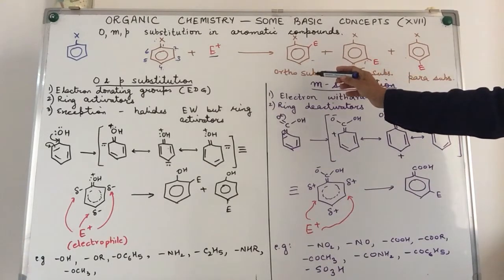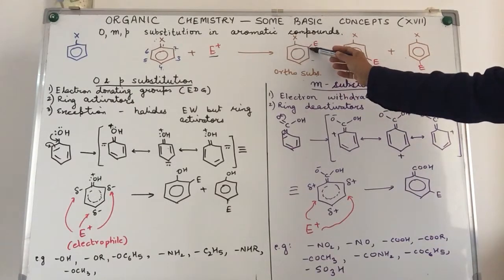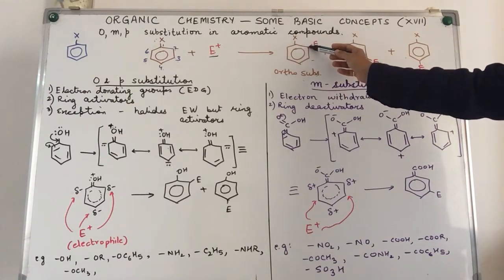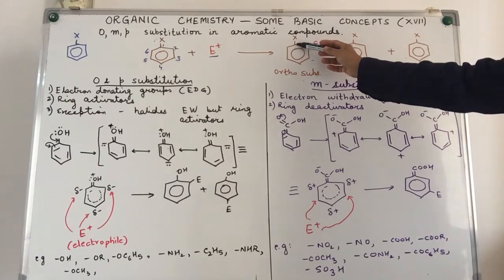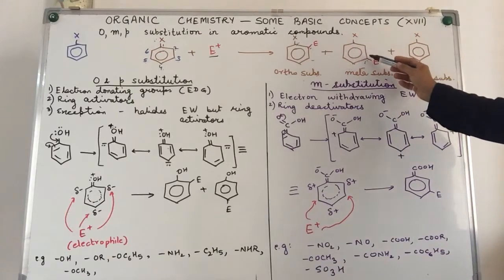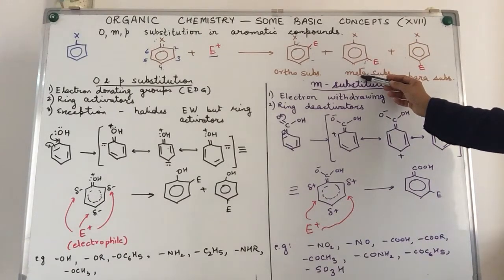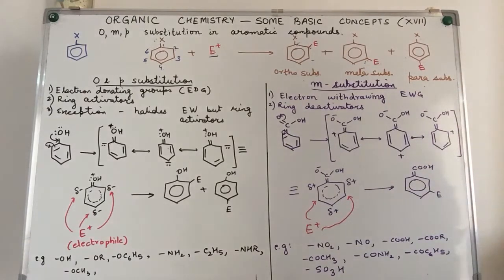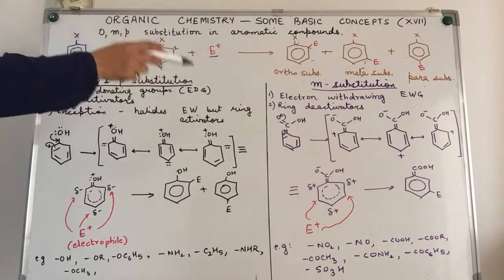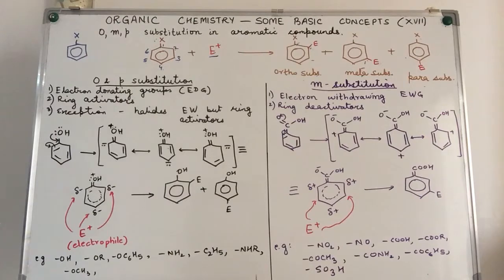The fifth position is equivalent to the third position and the sixth position is equivalent to the second position. We can have an ortho-substituted product, that means a 1-2 product. 1-3, this position is called the meta-position. 1-4 is called the para-position. What type of groups affect ortho-substitution, meta-substitution or para-substitution? What is their behavior? What is the criteria?